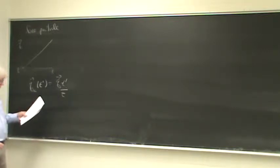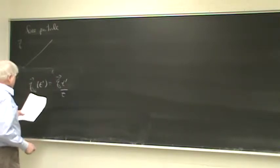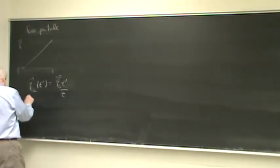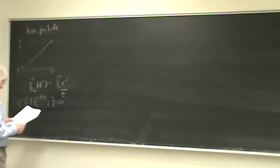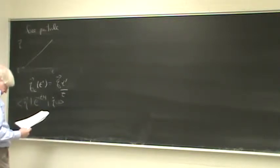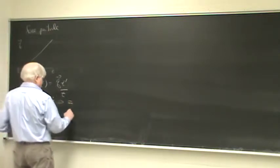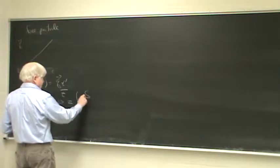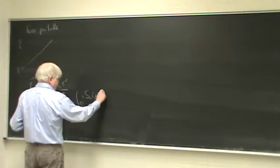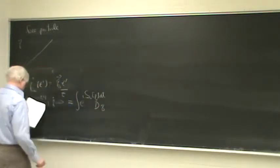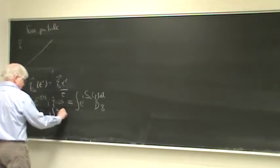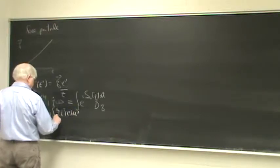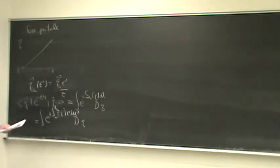So what do we expect? We expect the amplitude ⟨q|e^{−iHt}|q=0⟩ to be an integral e^{iS₀[q]} Dq — that path integral. On the other hand, this S₀ we can write explicitly as e^{i ∫₀ᵗ (m/2) q̇²(t') dt'} Dq. So that's the formulation in terms of path integrals.